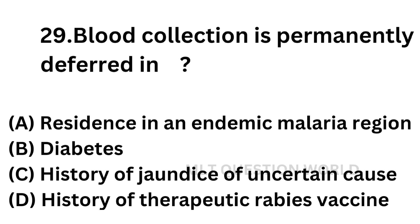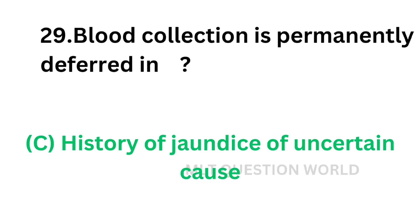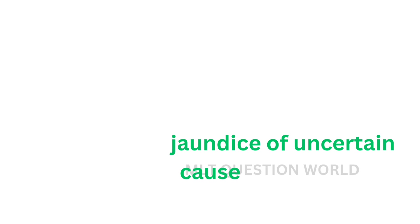Question No. 29. Blood collection is permanently deferred in: Option A: Residence in an endemic malaria region. Option B: Diabetes. Option C: History of jaundice of uncertain cause. Option D: History of therapeutic rabies vaccine. The correct answer is Option C — history of jaundice of uncertain cause. A donor with this history is unsuitable for blood donation.